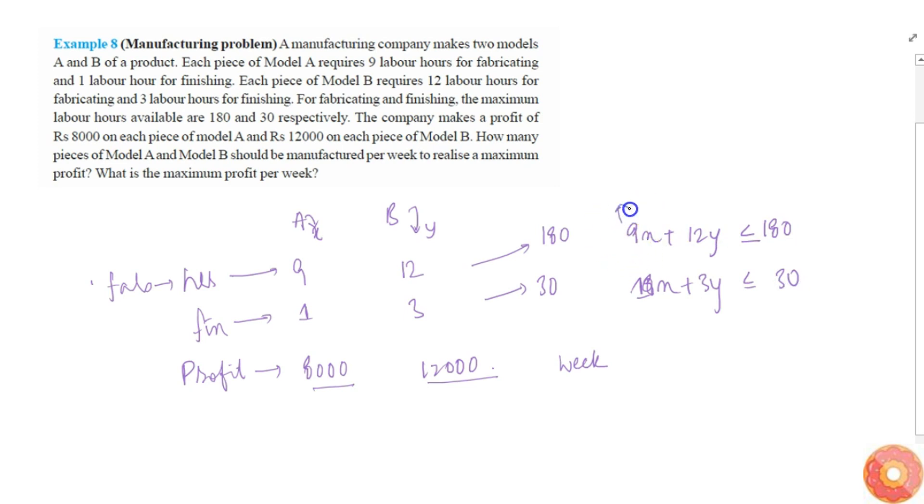And similarly 1X plus 3Y less than or equal to 30. So, this will simply become 3X plus 4Y less than or equal to 60. So, we have one constraint 3X plus 4Y less than 60. Another constraint X plus 3Y less than 30. And finally we are asked profit function. That is profit will be equal to simply 8000X plus 12000Y. This is profit.